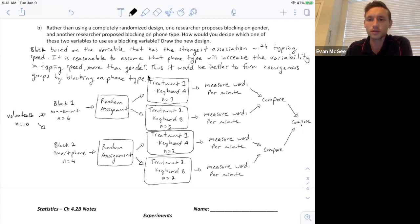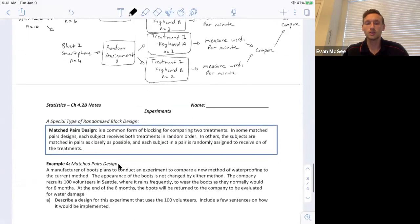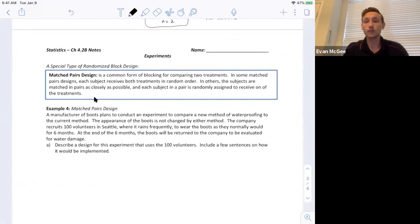So you don't have to put the box around. I just want to put the box so you could see it more clearly from my design. So now let's look at the last type of design we'll learn, and it's a special, it's technically a randomized block design is what it is, but it's a certain type and it's called a matched pairs design.